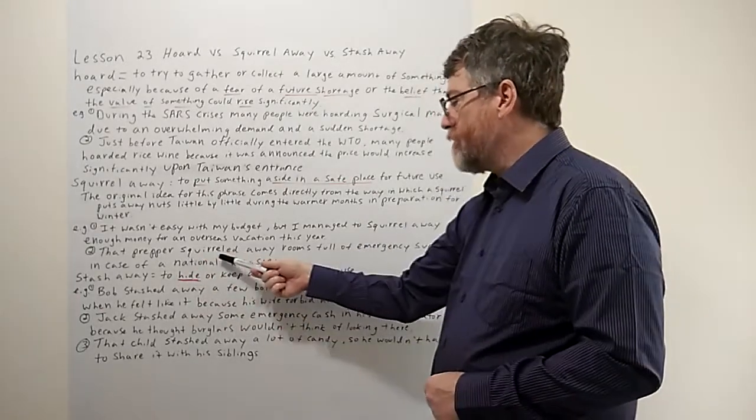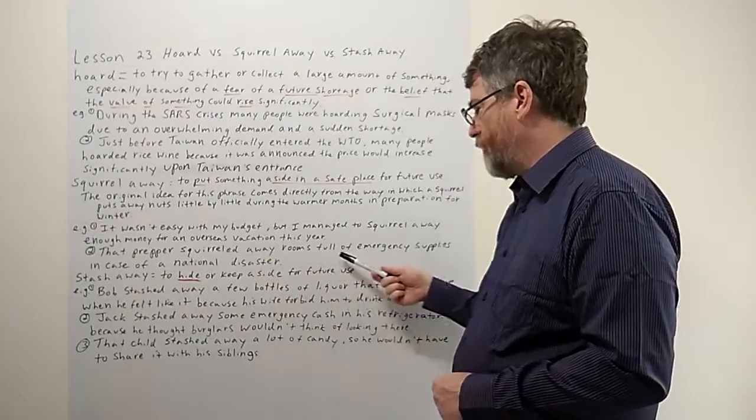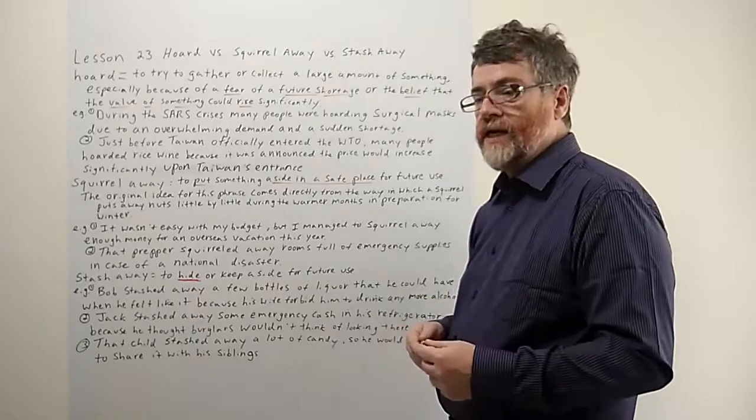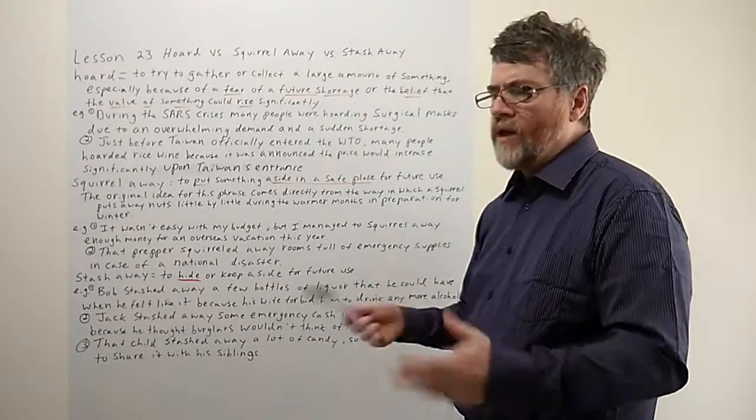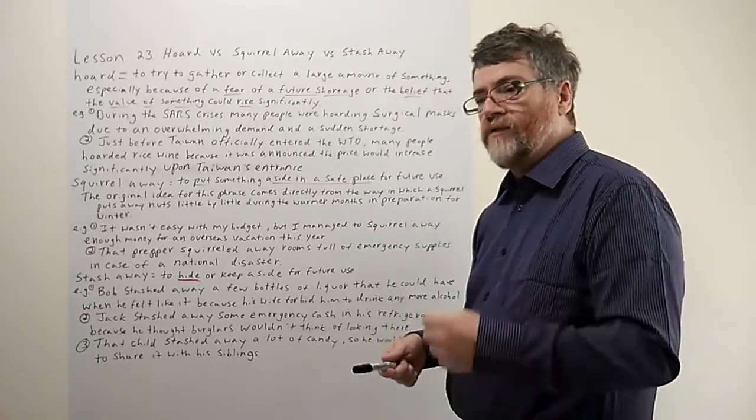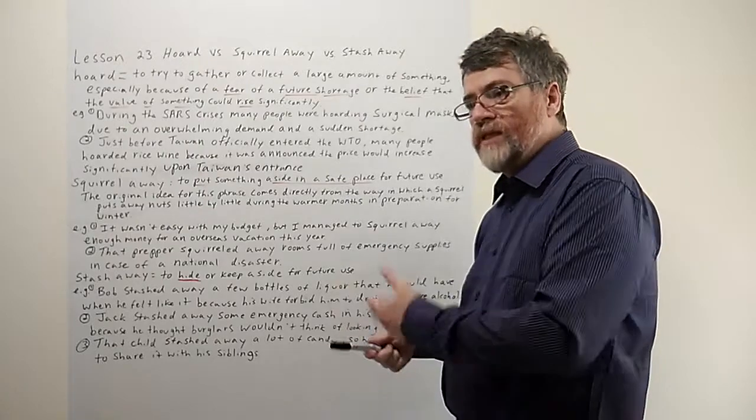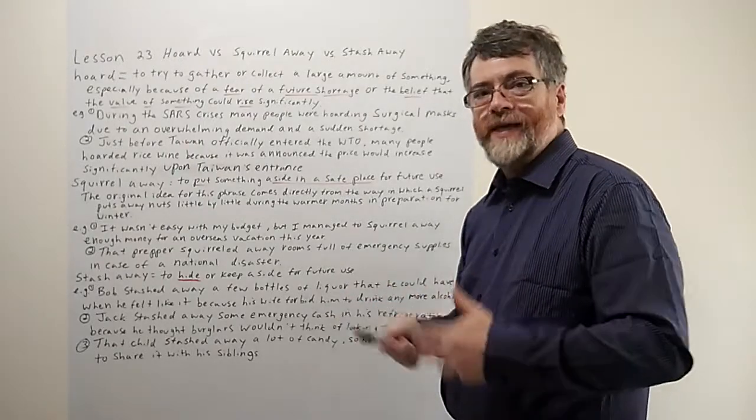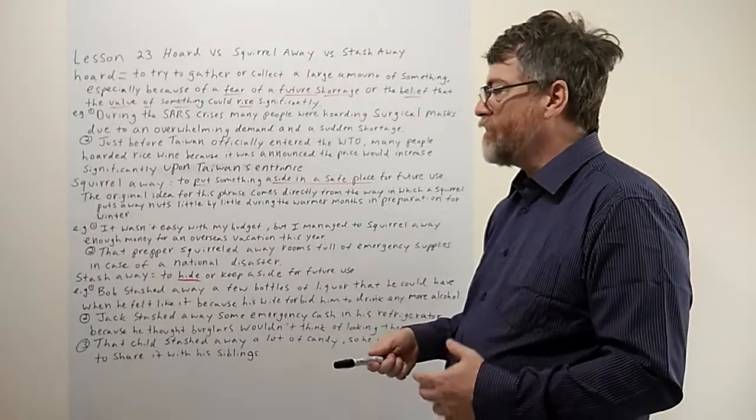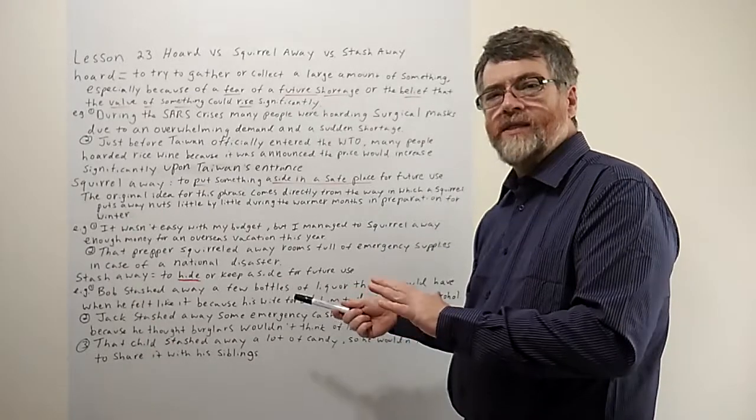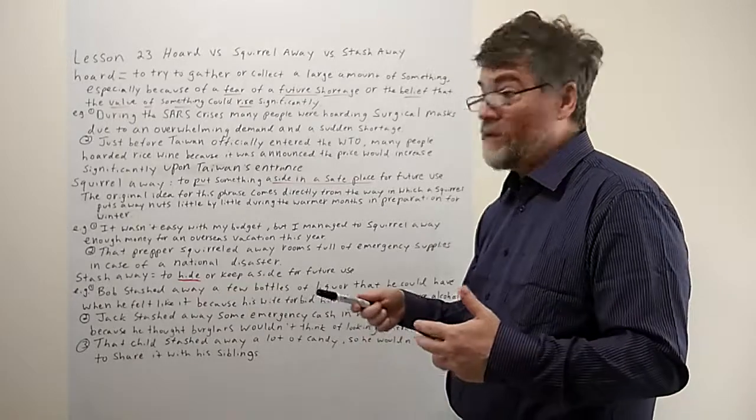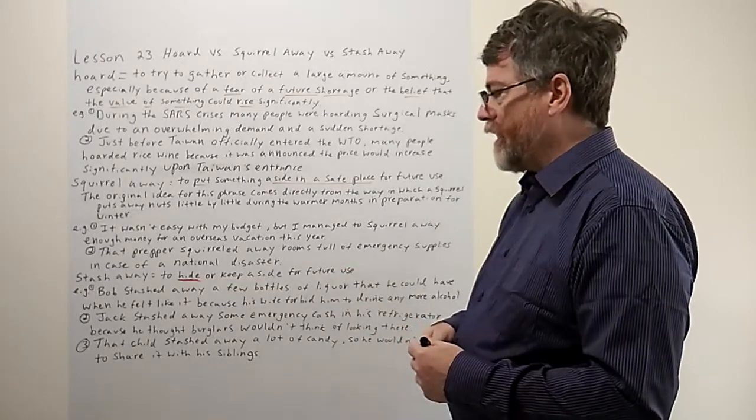Let's take a look at the second example. That prepper squirreled away rooms full of emergency supplies in case of a national disaster, or really any type of disaster. They got a lot saved up. They didn't go all out and buy it all in one day. They probably couldn't afford to do that. They did it little by little. One week they picked up this, the next week they picked up that, and they picked up more than they needed. And over time it built up. So that's usually the idea of squirrel away. You're putting it aside, you're putting it in some safe place for future use, especially just in case something happens.